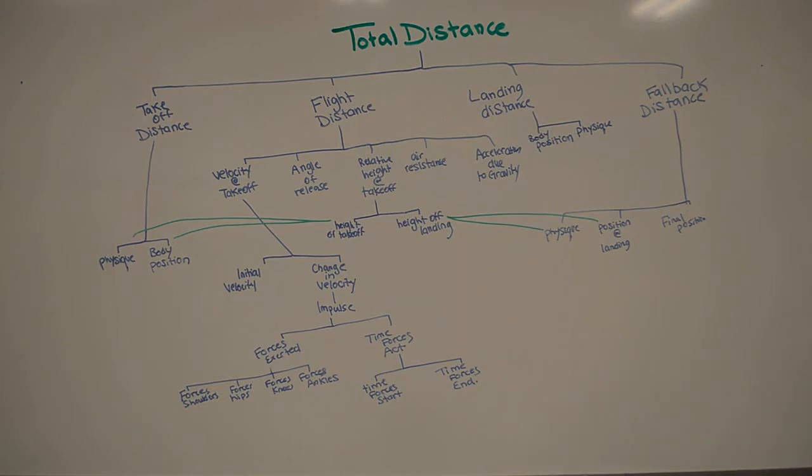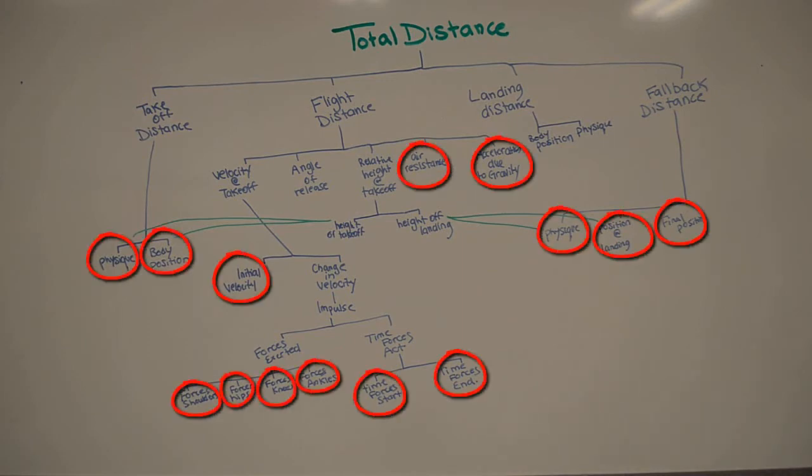Now that we're finished with the model, we can highlight or circle the boxes at the end of the various flow paths. These are the basic determinants of the task. We may or may not be able to modify them.